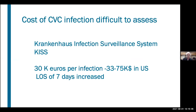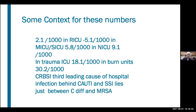The Krankenhaus infection surveillance system — KISS, from Germany — estimated that the cost of these infections is about 30,000 euros per infection, which translates to somewhere between $33,000 and $75,000 in the US. The length of stay for a catheter infection is about seven days by the time you change the catheter and mark the response, and there's often a period of home antibiotics after this. So they're fairly expensive and life-threatening infections, with many reasons to understand and prevent their occurrence.